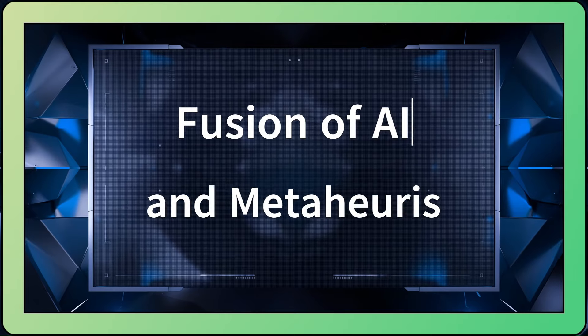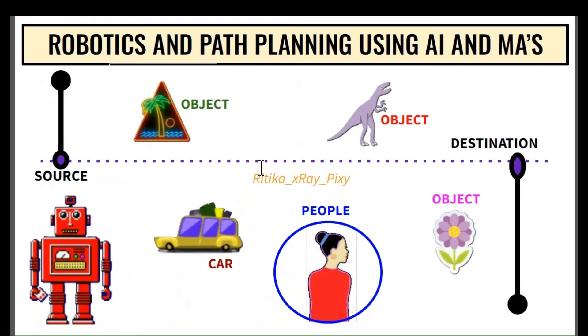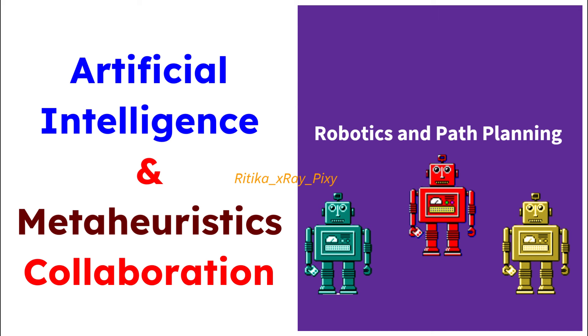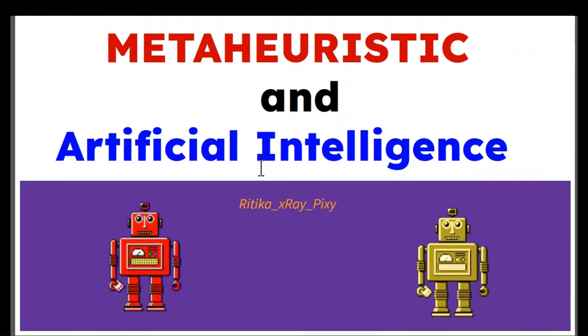In this video we will try to understand how we can use artificial intelligence with meta-heuristic algorithms to solve different real-life optimization problems. We will understand this collaboration using two different examples: first, for robotics and path planning, combining AI with meta-heuristic algorithms for robot path planning; and second, for a real-world application where we integrate both AI and meta-heuristics to optimize delivery routes, minimizing overall travel distance and time.